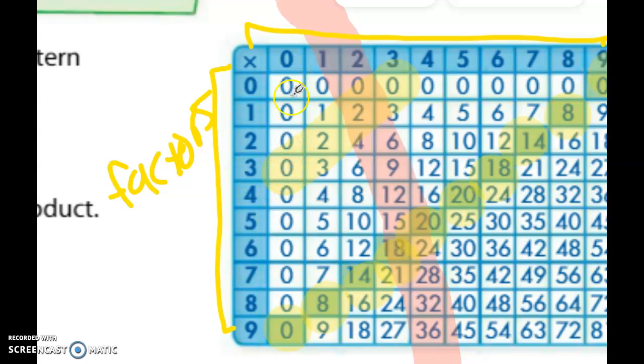So it looks like three times zero is zero and zero times three is zero, so it is following the same trend. What about two times one is two and one times two is two.